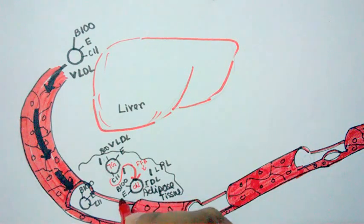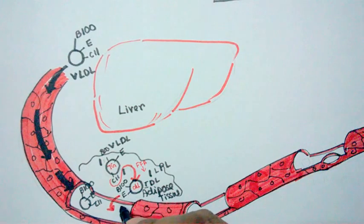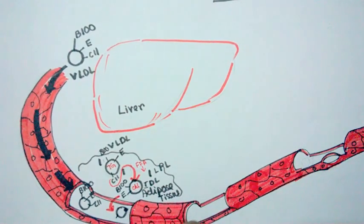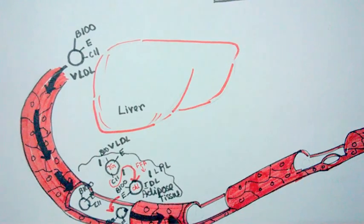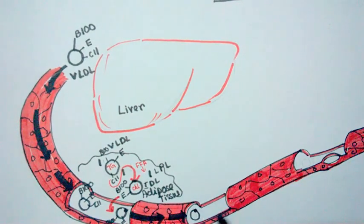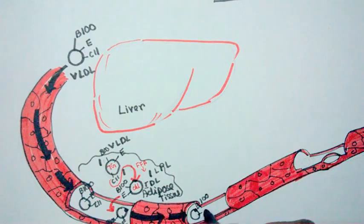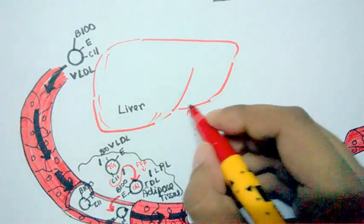This IDL gets back into circulation. It has ApoB100 and ApoE, and flows through the capillaries circulating around the body. IDL can then be converted into another particle called LDL. LDL has ApoB100 and ApoE.